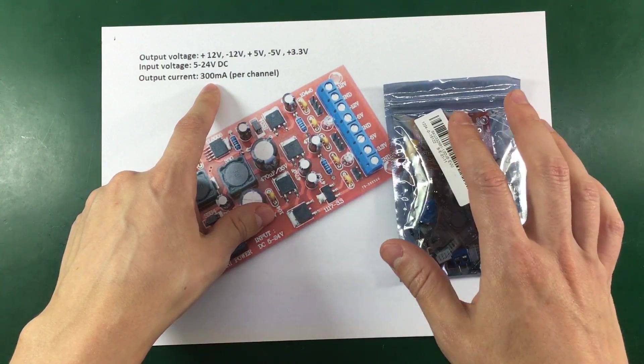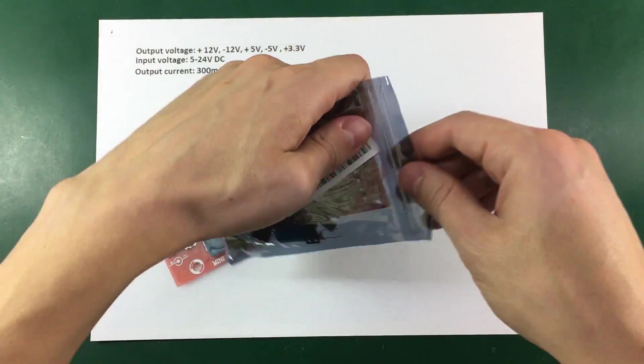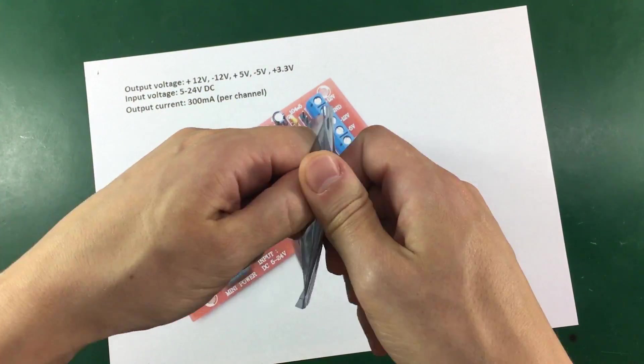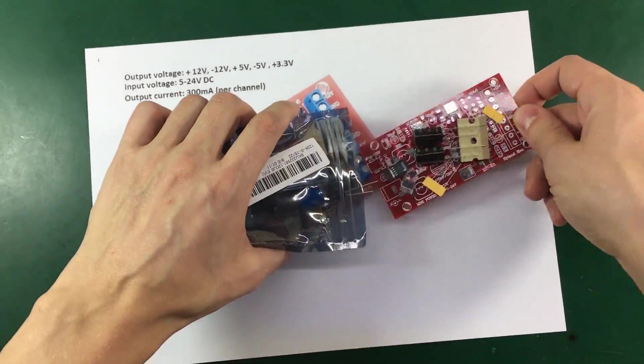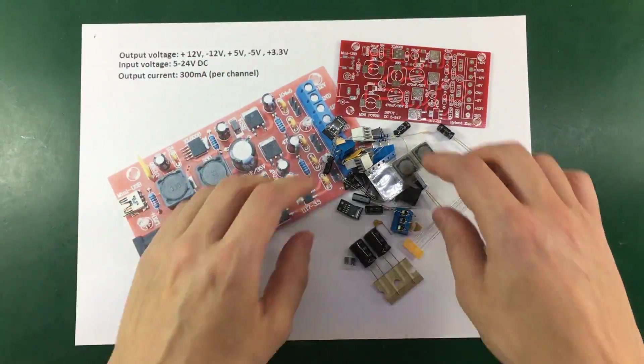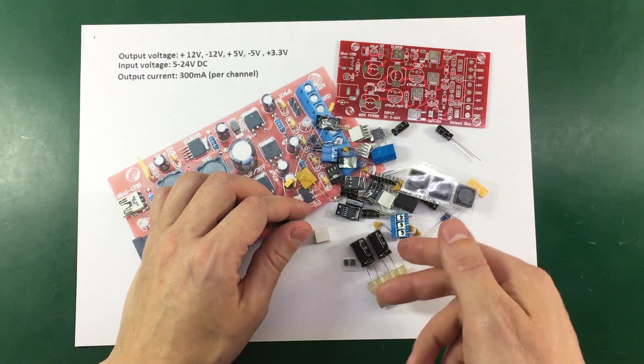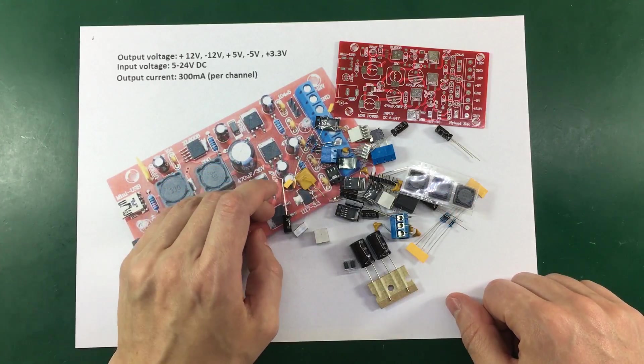So let's see what we get inside this ESD shielding bag. It looks like we have a mix of SMD and through-hole parts in this kit.